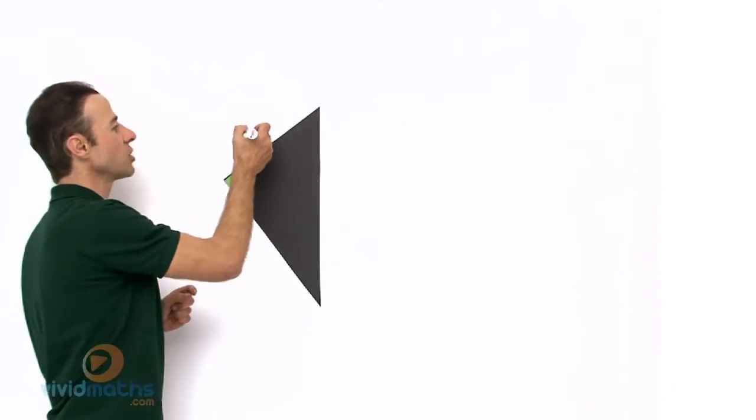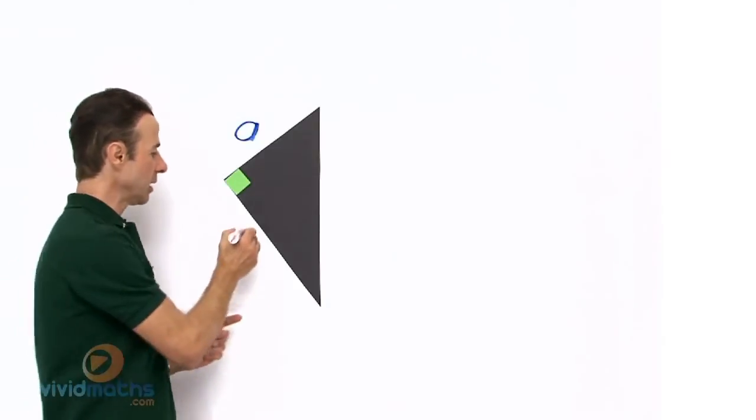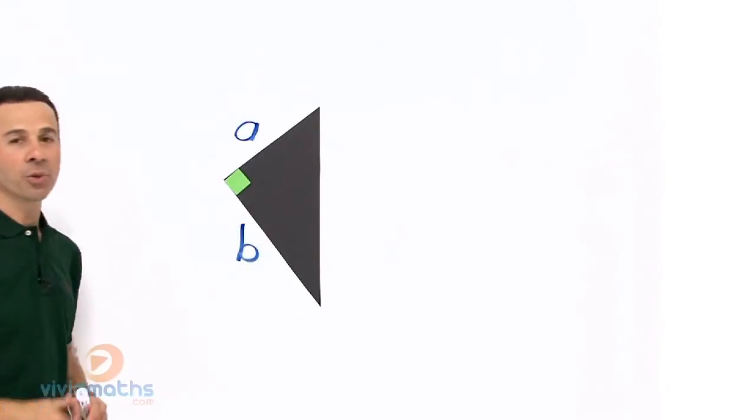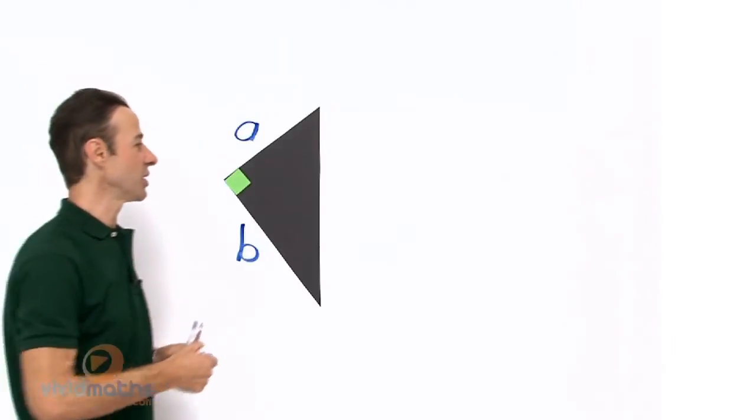So let us write up each side. Let us call this side across here A and down here let us call this B and the third side which is often the longer side let us call that C.